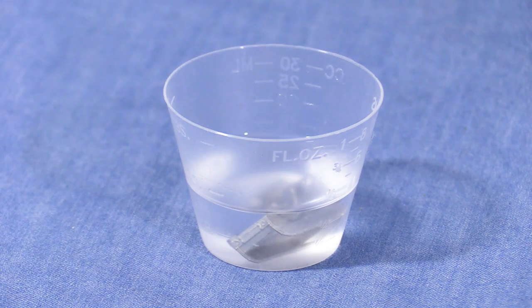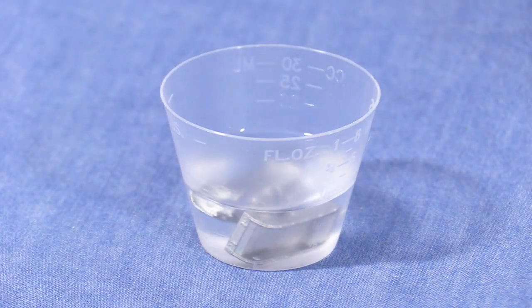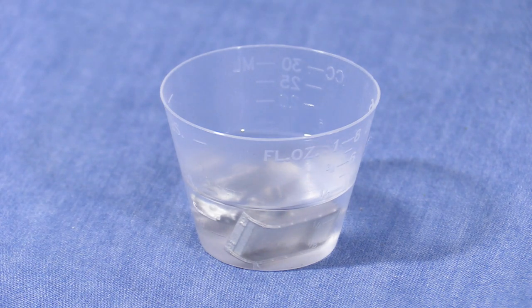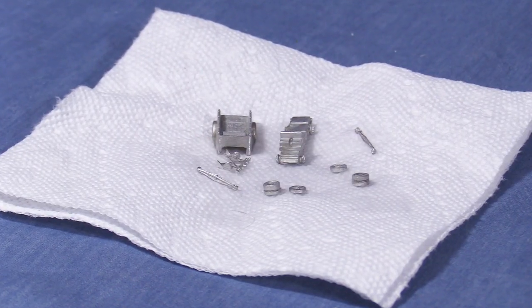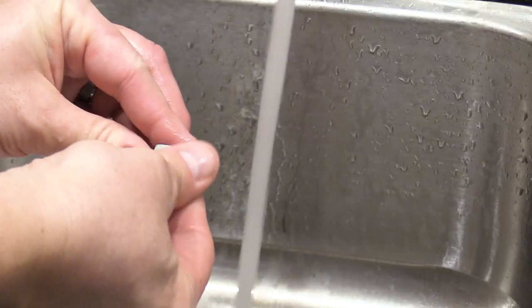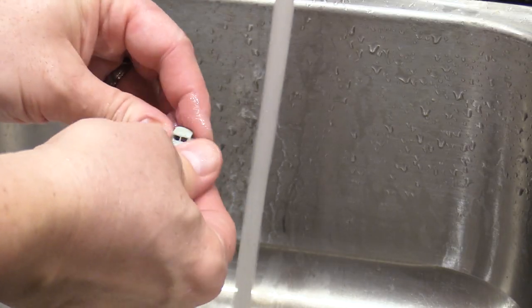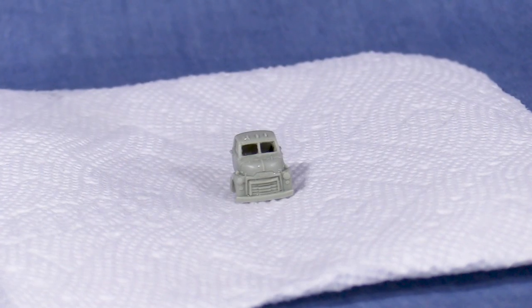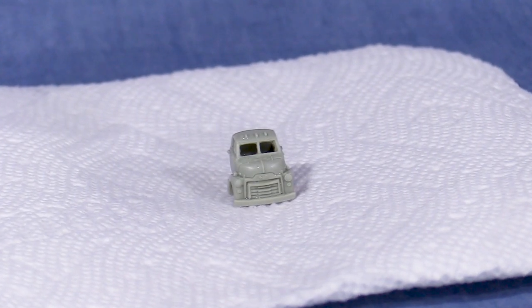Now that all the white metal parts are free of flash, I'll give them a soak in some isopropyl alcohol to clean off any oils or dirt that might interfere with painting. After a few minutes I'll set the parts on a paper towel to dry. The resin cab needs to be washed. I'll use some dish soap and rinse it in some warm water. Once it's clean, I'll set it on a paper towel to dry overnight.